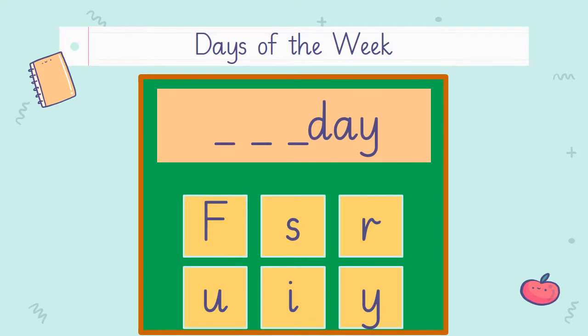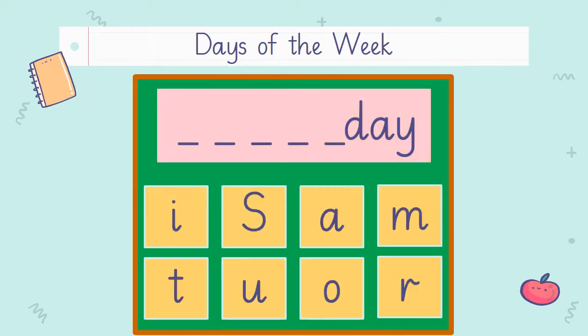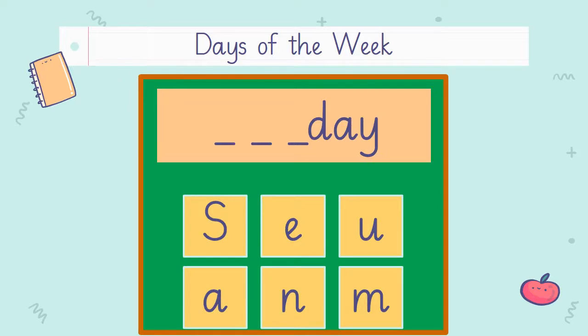Which day comes after Thursday? Yes — Friday! Now choose the correct letters to complete the spelling of Friday on the green board and show it to your teacher. Which day comes after Friday? Saturday! Now complete the spelling of Saturday and show it to your teacher. And the last day of the week is Sunday! Very good! Now complete the spelling of Sunday and show it to your teacher.